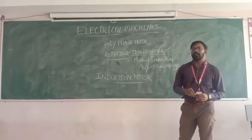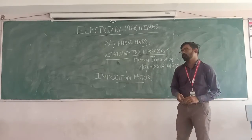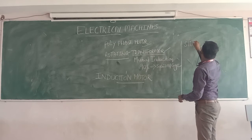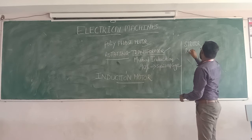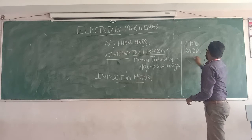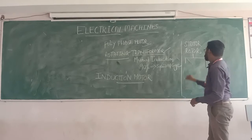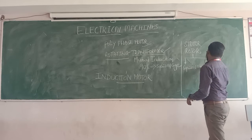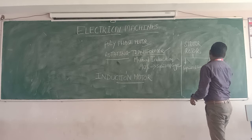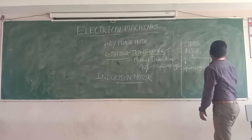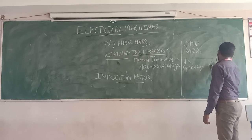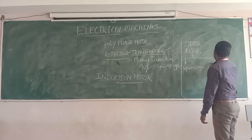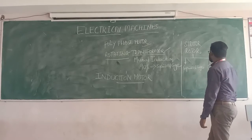The squirrel cage induction motor consists of two parts: one is the stator and the other is the rotor. The rotor is classified into two types: one is the squirrel cage rotor and the second is the wound rotor.